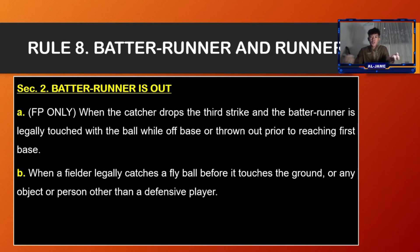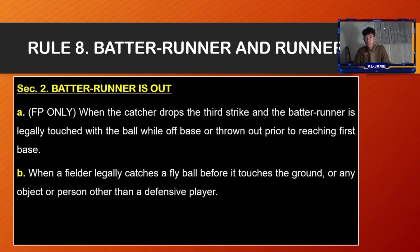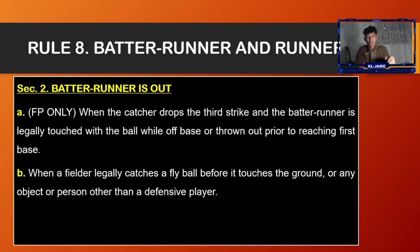Section number two, the batter-runner is out when the catcher catches the third strike and the batter-runner is legally touched with the ball while off base, or thrown out prior to reaching first base. Also, letter B: when a fielder legally catches a fly ball before it touches the ground or any object or person other than an offensive player.